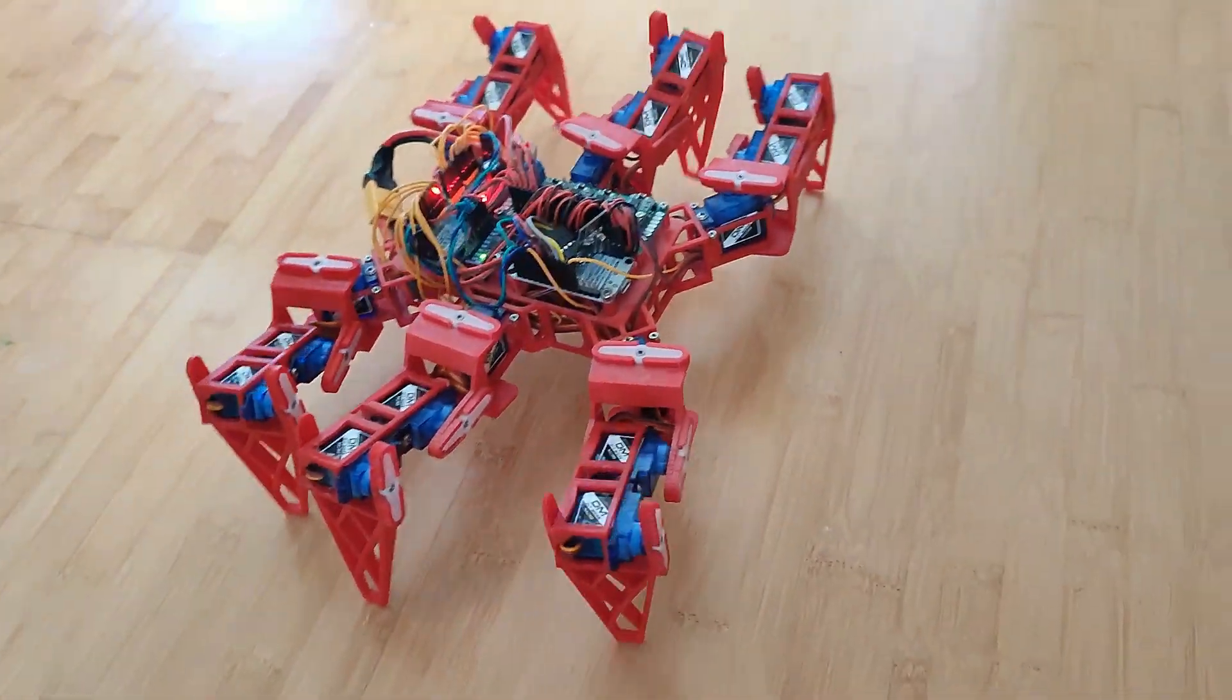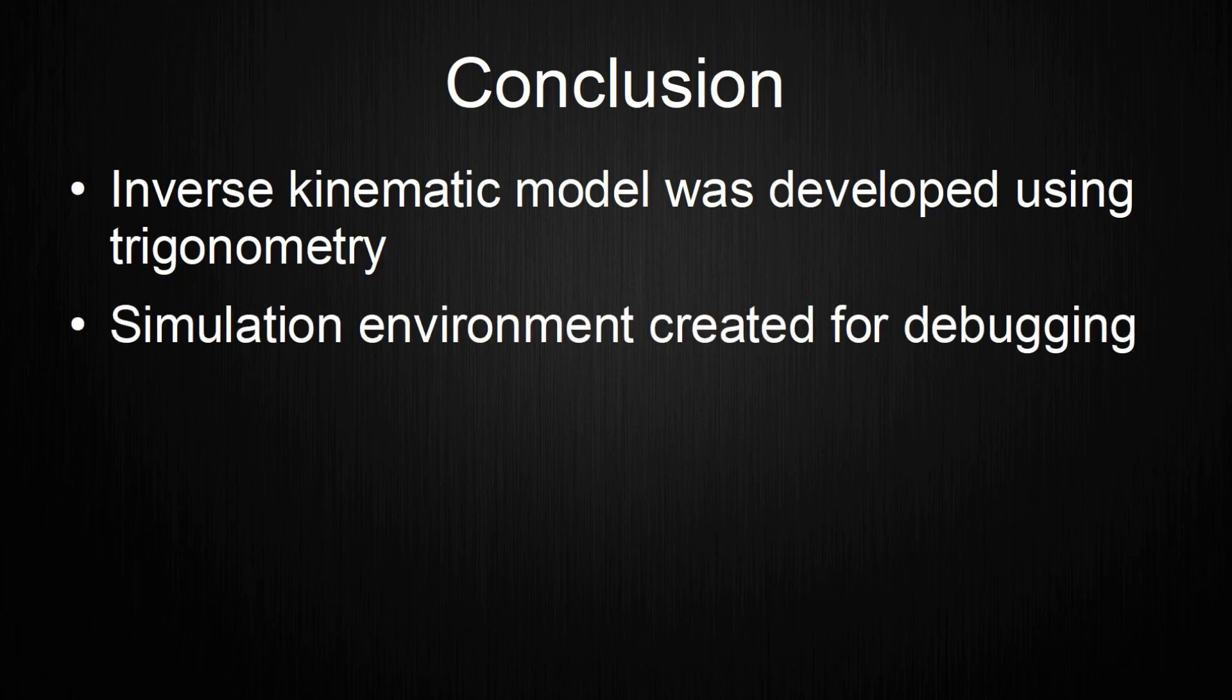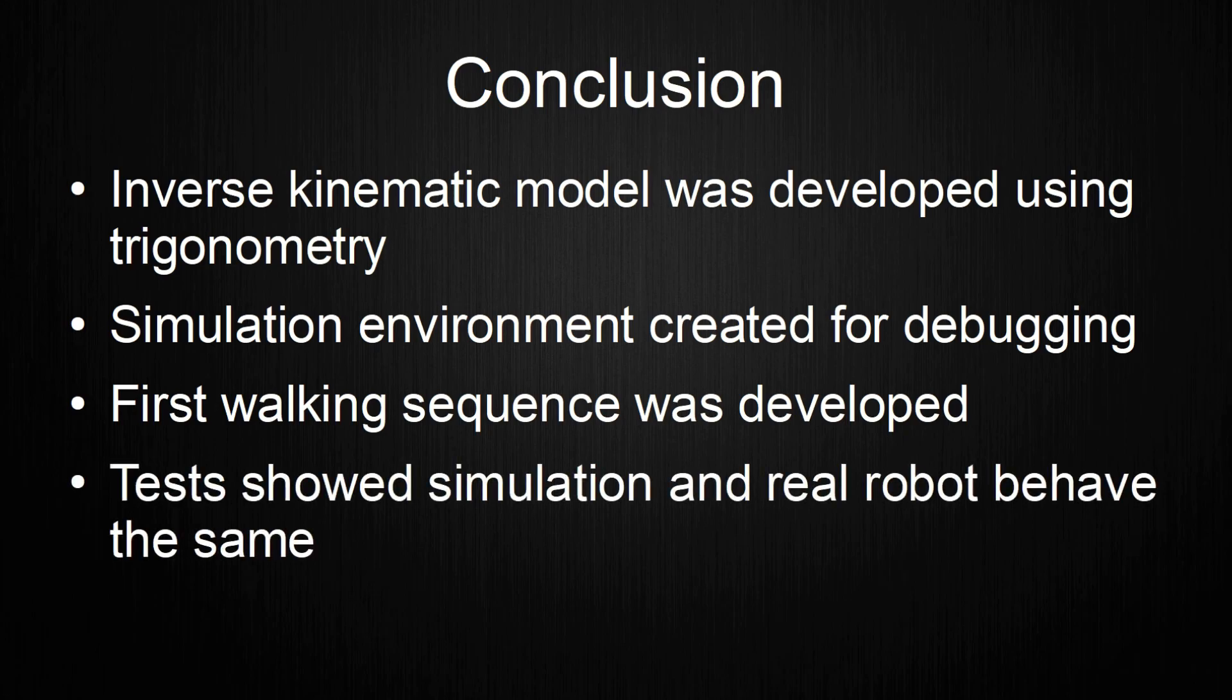Let me collect the key points in this video and give you an outlook afterwards. The main takeaways in this video are an inverse kinematic model was created for a hexapod using trigonometry. A simulation environment helped with debugging of the inverse kinematic model. The simulation enabled the development of a first walking sequence. Tests performed on the real hexapod revealed that the simulation performs the same as the real robot. The completion of the inverse kinematic model is a big milestone in this project. It allows the development of proper walking based on target coordinates, including moving in different rotations.